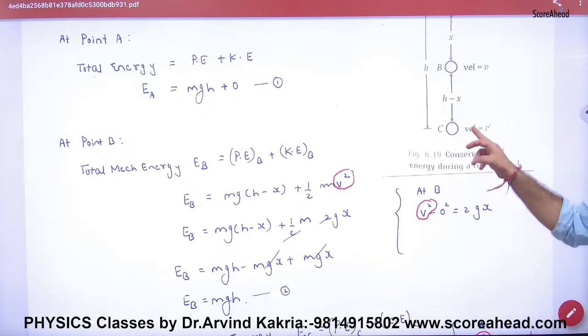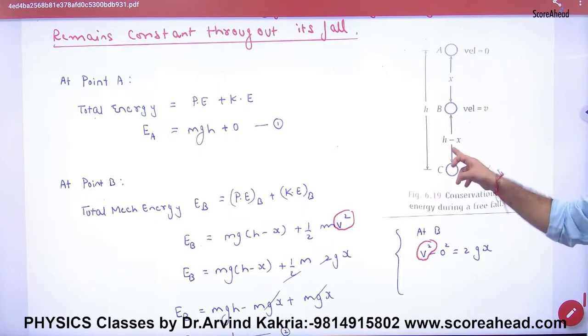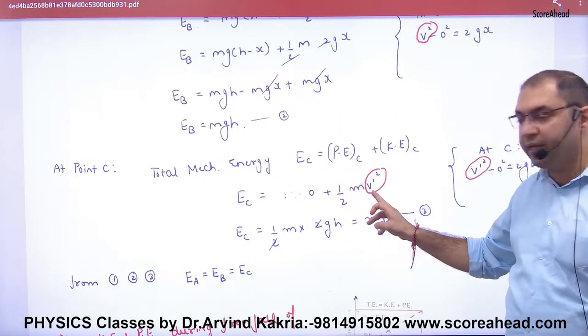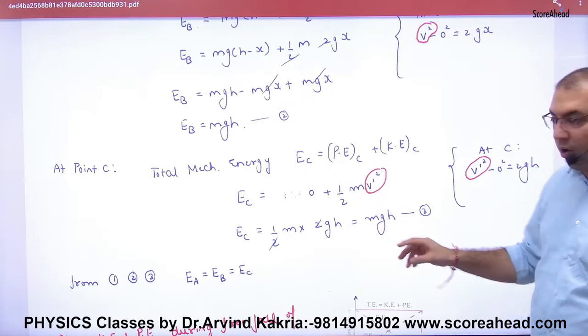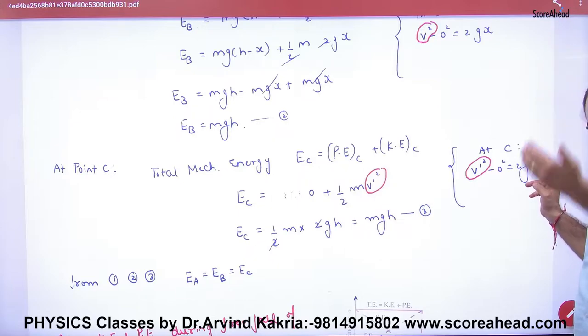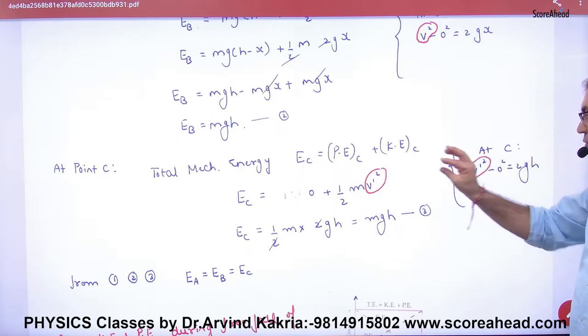At point C, what is potential? Zero, it fell on the ground. And velocity is V dash. For h distance going down, potential is zero, kinetic is half mV'². And V'² minus 0² is 2gh.